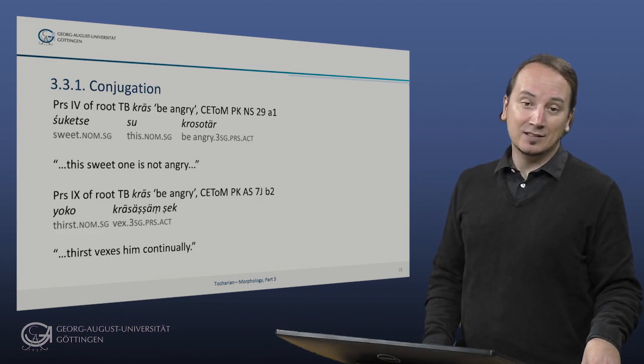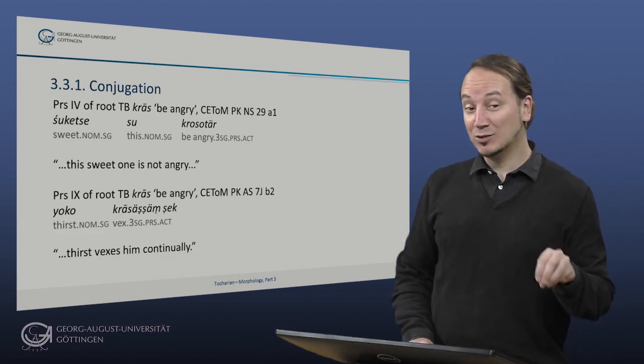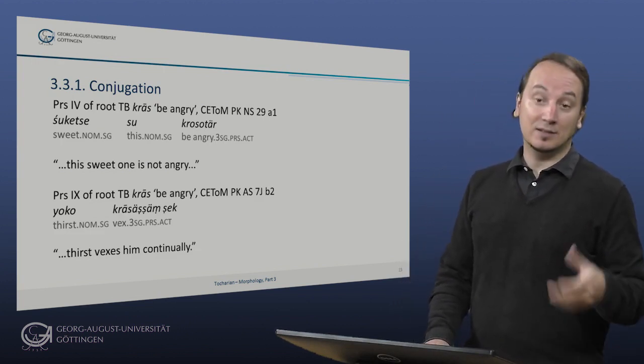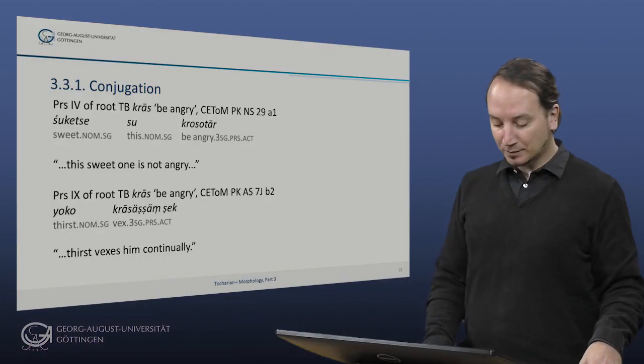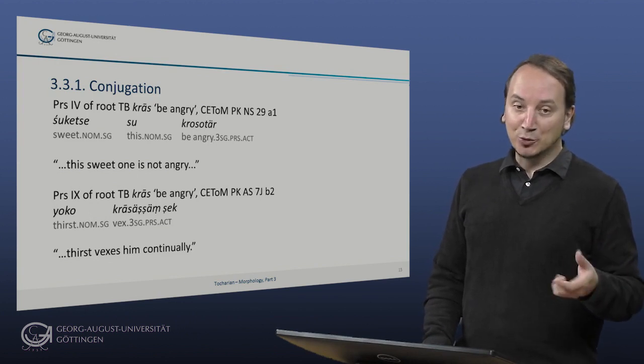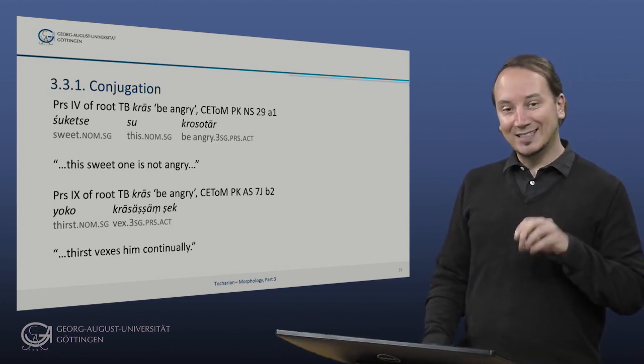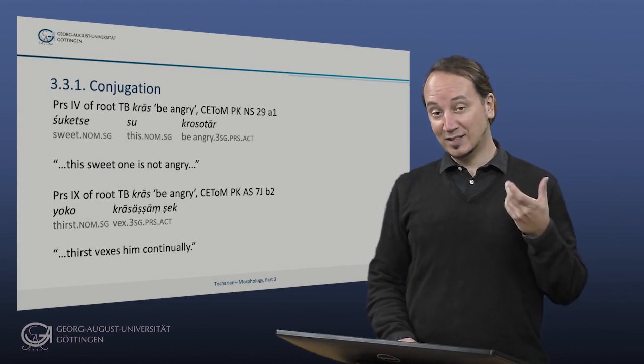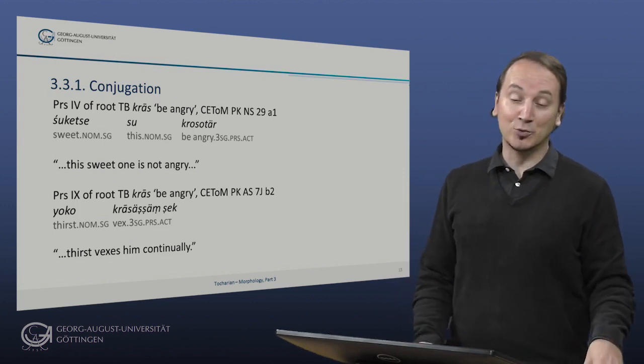The second example of present nine is once more taken from the Karmavibhanga, and here we find the causative present 9 to the same root kras, meaning now transitive 'make angry'. So we have yoko krasiṣcem, 'thirst vexes him continually.' So this is just one combination of how different stems of the same root play a role in valency changes, and you will hear more about that by Gerd Carling. And this interaction of different verbal stems in a sophisticated system is quite special and makes the Tocharian verbal system really fun to learn and to do research on.